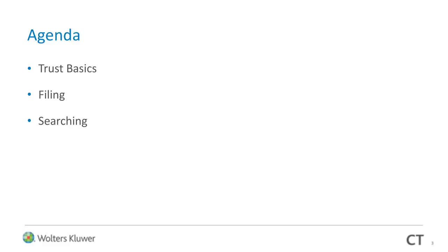The most important thing with trusts, just like with any UCC document, is making sure that you are filing correctly — not only with the proper name, which is significant with trusts, but also in the proper location. Before we get into filing, we want to touch on the basics to establish a foundation, then get into filing, and certainly talk about searching at the end. If you filed properly and in the right location, searching flows naturally from that. We'll be spending more time on trust basics and filing.